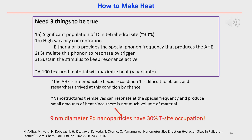To make heat in palladium, three things need to be true. One: you need significant population of D at a tetrahedral site or high vacancy concentration — either A or B provides a special phonon frequency that produces the anomalous heat effect. Two: you need to stimulate this resonance by a trigger. And three: you need to sustain the stimulus to keep the resonance active. It's very helpful to have a 100-texture material, as demonstrated by research by Vittorio Violante. The AHE is irreproducible because condition 1 is difficult to obtain — researchers arrive at this condition by chance. Nanostructures themselves can resonate at the special frequency and produce small amounts of heat, and 9-nanometer diameter palladium nanoparticles have 30% T-site occupation, which is useful for getting the heat.